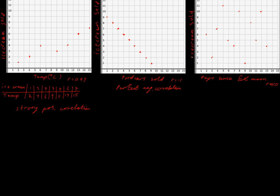Finally, if we look at the number of ice creams sold versus the number of days since the last full moon in this graph on the right, we can see that there doesn't appear to be any correlation at all. Two days after the full moon, six ice creams were sold; the next day, two ice creams; the next day, seven. It's all over the place. There's no line you can see going either up or down — this is just all over the place. So we say there is no correlation between these two sets of data.